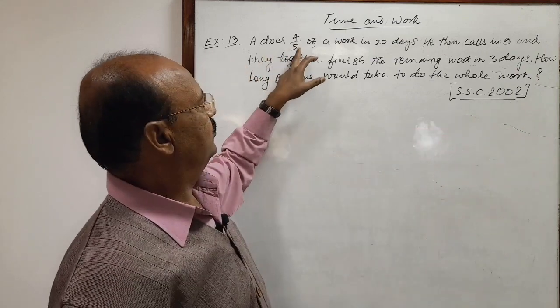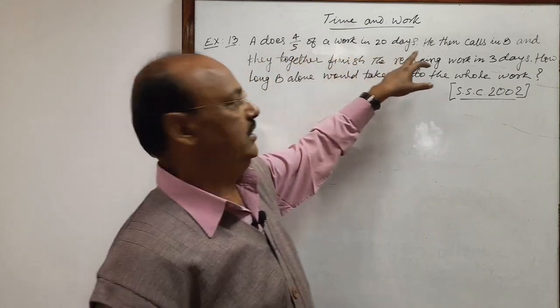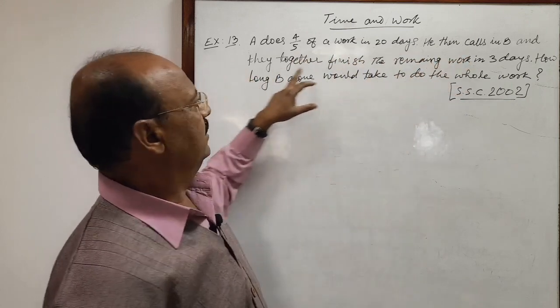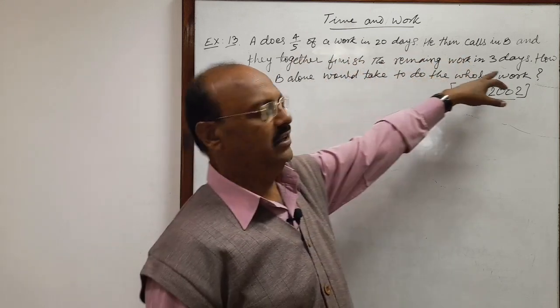Question is: A does 4 by 5 of a work in 20 days. He then calls in B and they together finish the remaining work in 3 days.